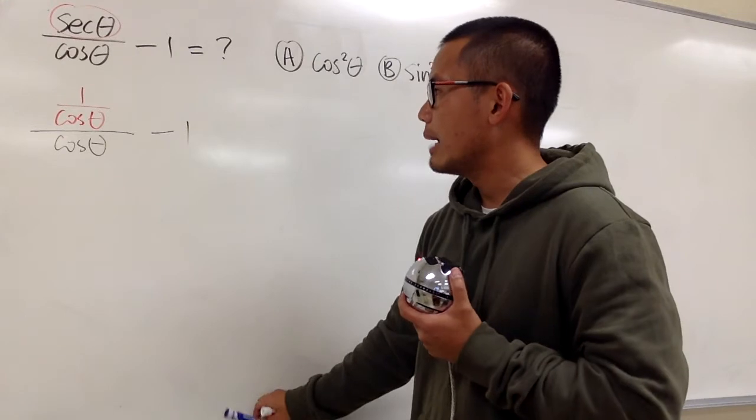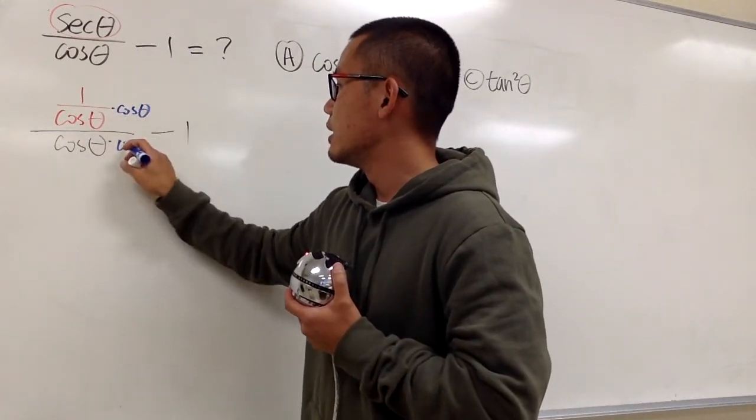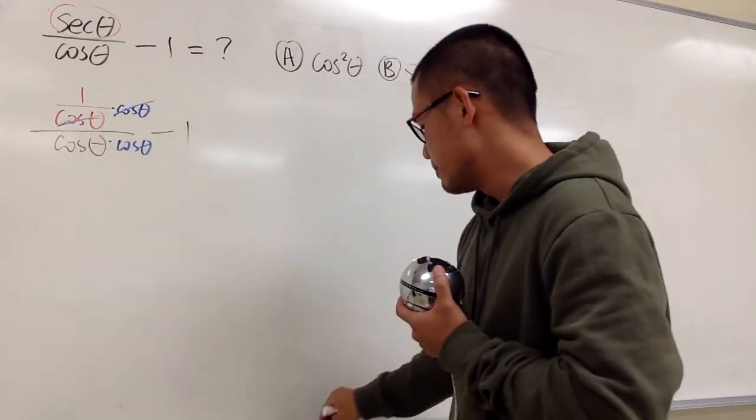So to do so, I'm going to just multiply the top and bottom by this cosine theta, so that this and that will cancel, and that's very nice.